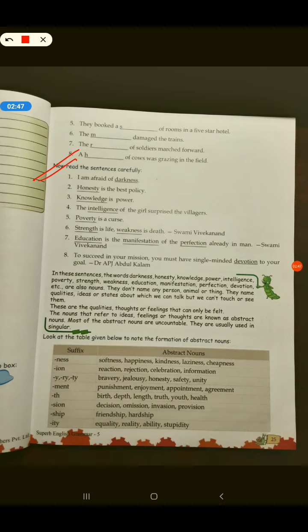Education is the manifestation of the perfection already in a man. Swami Vivekananda. To succeed in your mission, you must have single-minded devotion to your goal. Dr. A.P.J. Abdul Kalam. Children, these three sentences last. These are not just very good sentences. These are very good lessons of life.